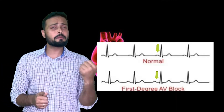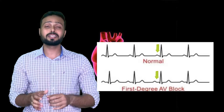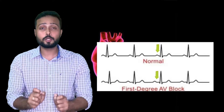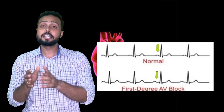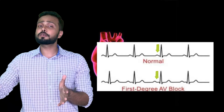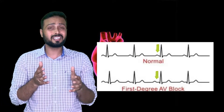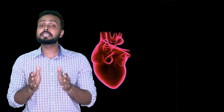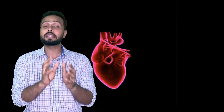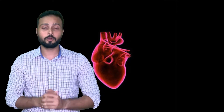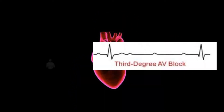The PR interval — if you remember from the last video — has a normal duration of 0.12 to 0.20 seconds. If it increases beyond that but the heartbeat is not dropping, it is considered a first degree or grade 1 heart block. In second degree heart block, the PR interval may be normal but the heartbeat is dropping, and that is considered second degree heart block.